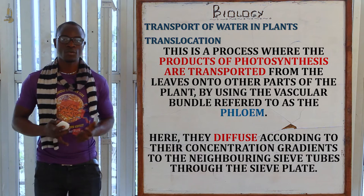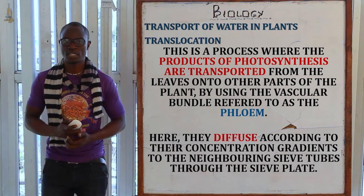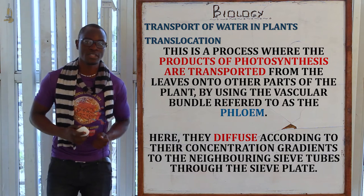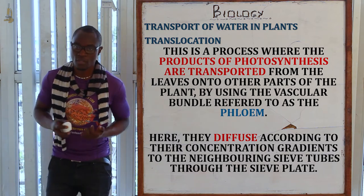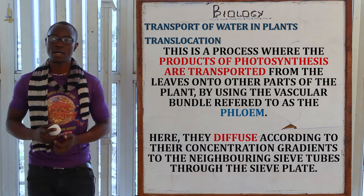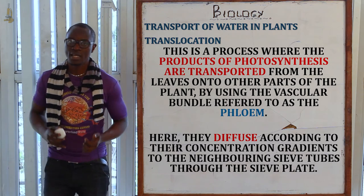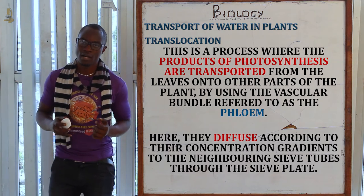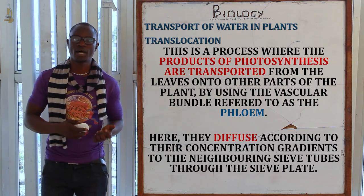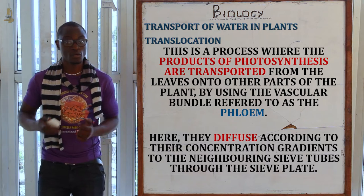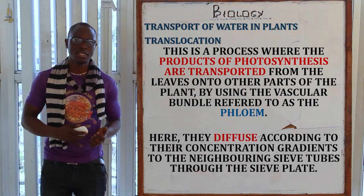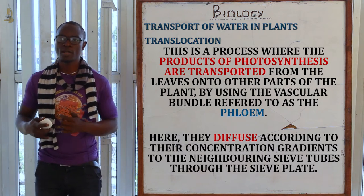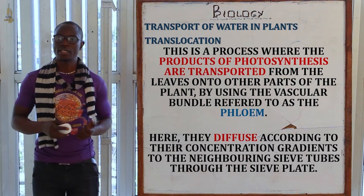Let's now look at translocation. Translocation is the process by which products of photosynthesis are transported from the leaves to the other parts of the plant, mainly through the phloem, because the function of the phloem is to conduct food substances throughout the plant. The translocated products diffuse according to their concentration gradient — when the concentration gradient is high they diffuse faster, and when it is low they diffuse more slowly.